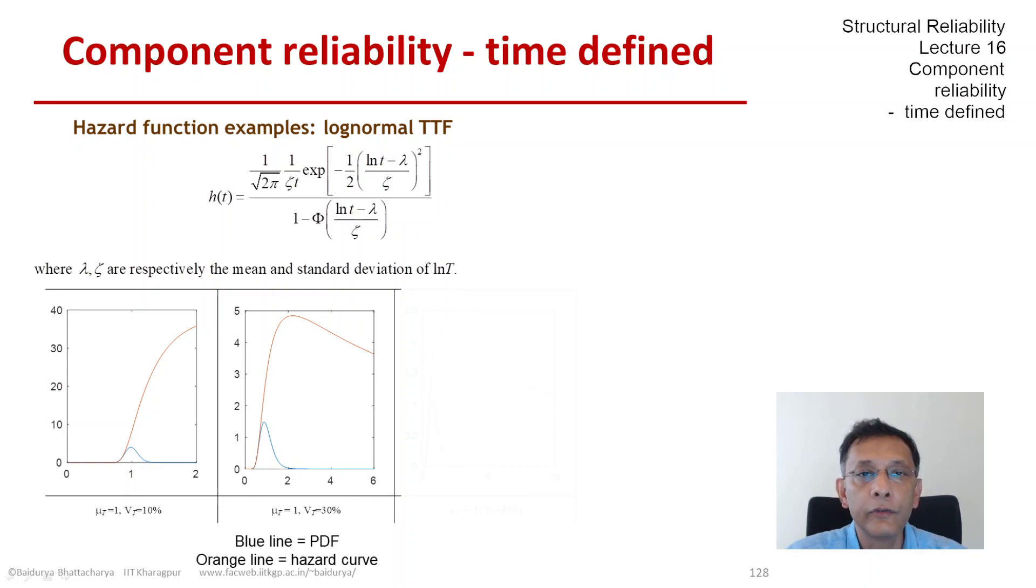Here, you see that the coefficient of variation is 30% and the orange line, the hazard function, increases quite sharply in the beginning, but then it plateaus out and then it starts to fall. So you have to be careful